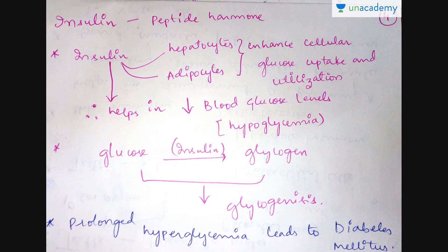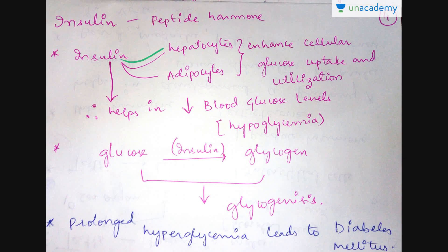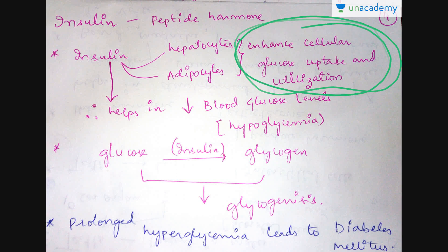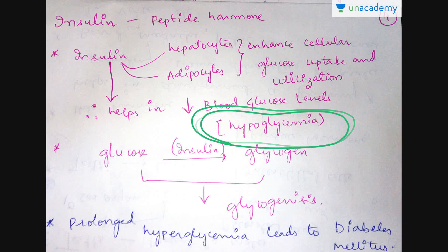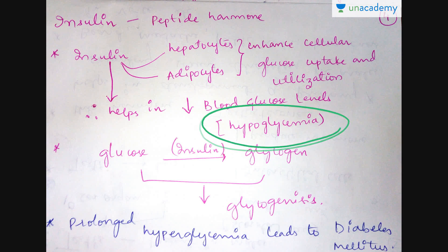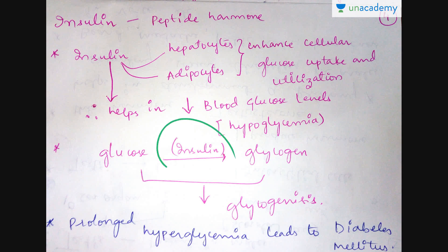Beta cells secrete a hormone called insulin, which is a peptide type of hormone. Insulin is taken up by hepatocytes and adipocytes for enhancing glucose uptake and utilization. This also helps in decreasing blood glucose levels. If the glucose levels in blood are decreased, it leads to a condition called hypoglycemia. The simple mechanism is that glucose is converted into glycogen with the help of insulin — this whole process is called glycogenesis.